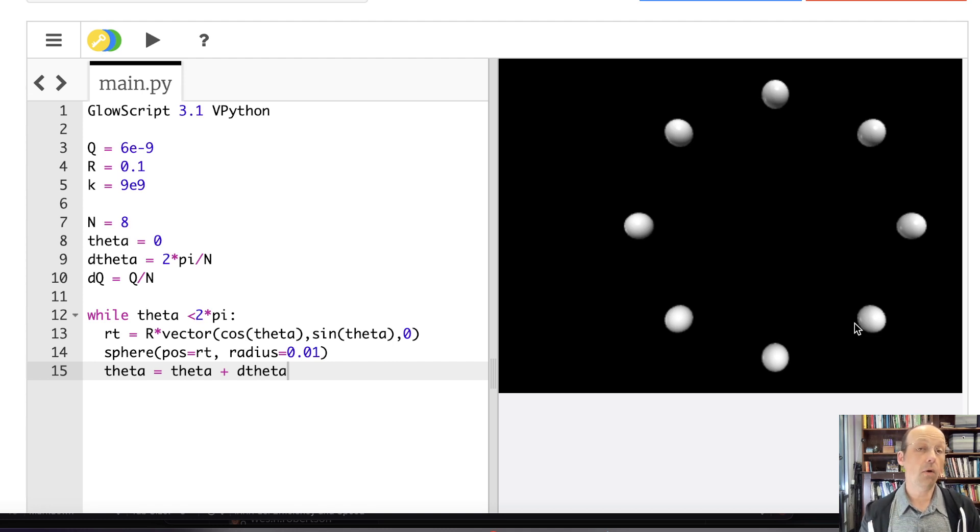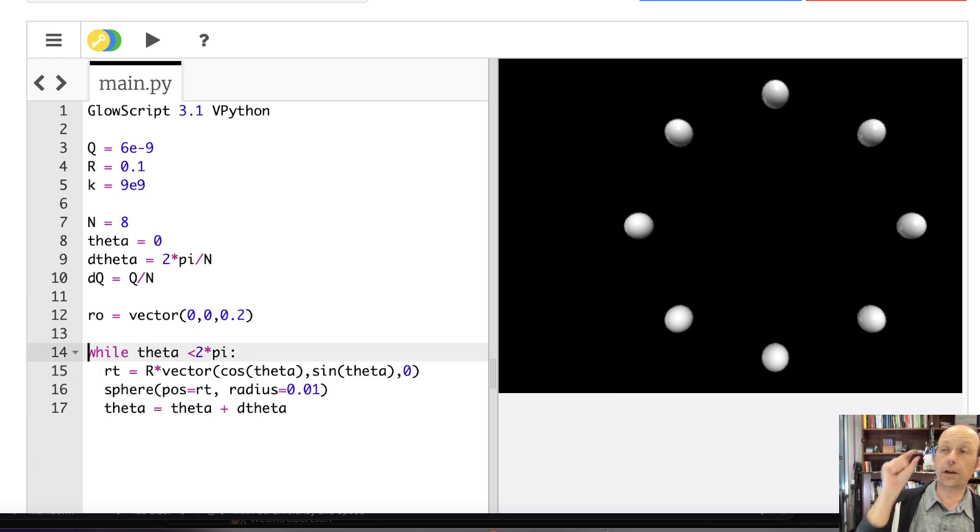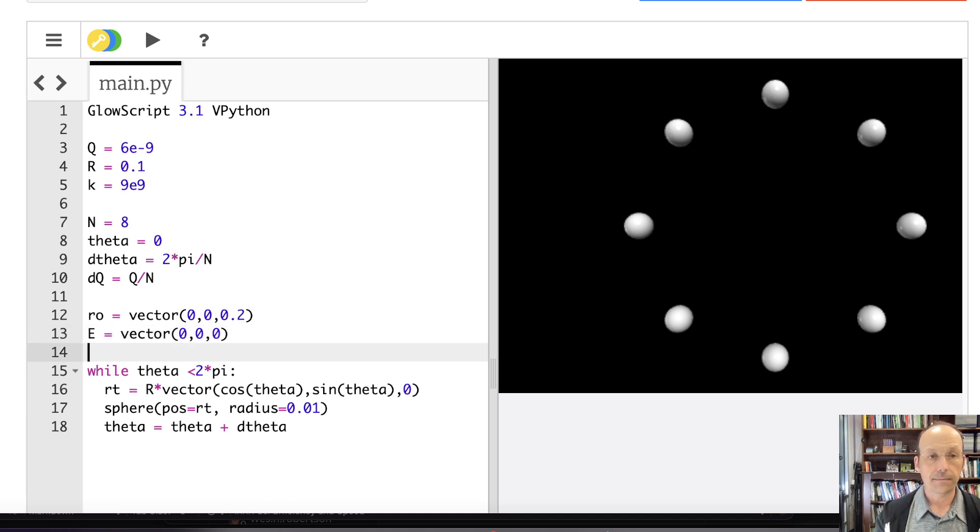Now I want to calculate the electric field at some location. I'm going to say r_o, the observation location, from the problem is vector(0, 0, 0.2). I need to start with E = vector(0, 0, 0) so I can add to the total each time.